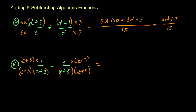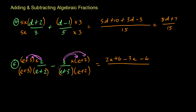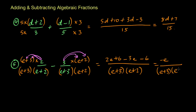Expanding out: 2 times e plus 3 means that 2 multiplies onto each value, giving 2e plus 6. Over here, minus 3 multiplies onto each value: minus 3 times e is minus 3e, and minus 3 times plus 2 is minus 6. It's all over the one value e plus 3 times e plus 2. Collecting terms: 2e take away 3e gives minus e, and plus 6 take away 6 is 0. So the final answer is minus e all over e plus 3 times e plus 2.